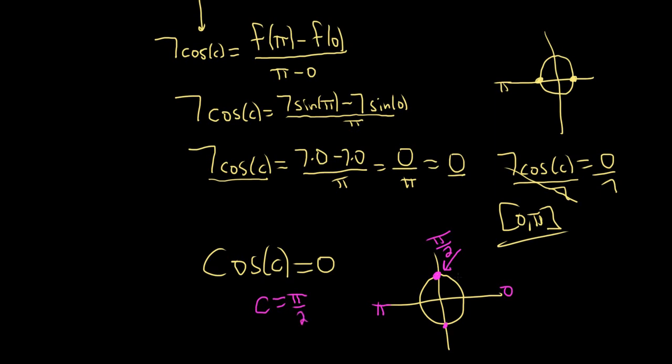So c should be equal to π over 2. And again, that's because this ordered pair is 0, 1. And so the x-coordinate is 0. And remember, on the unit circle, every ordered pair has the form cosine, comma sine. And so cosine is your x-coordinate. So the cosine of π over 2 is 0. So c is π over 2. And that's certainly between 0 and π. And that is the final answer.